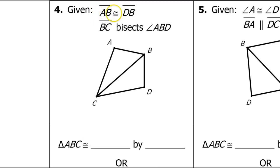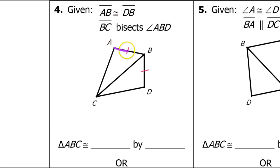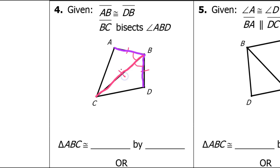For number four, we're given that AB is congruent to DB, and that BC bisects angle ABD. To bisect means to cut in half. So segment BC bisects angle ABD, which means it cuts that angle in half — so these two angles created are congruent. We can mark those. In addition, we can mark the shared side as being congruent in both triangles. So I see that I have a side, an angle, and a side, with the angle between the two sides. That makes this side-angle-side.